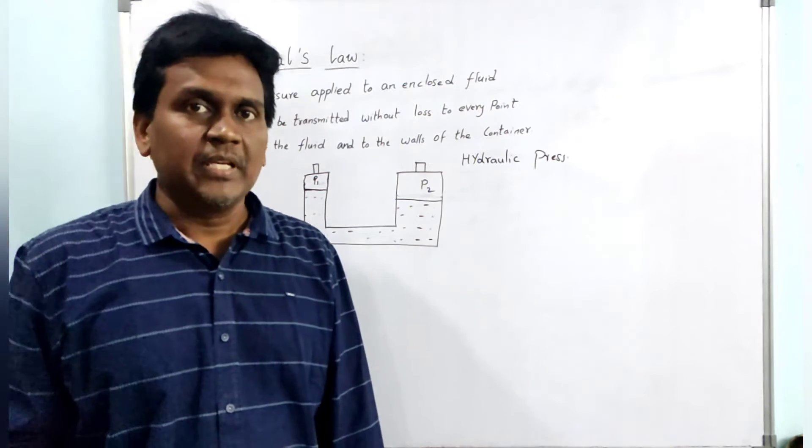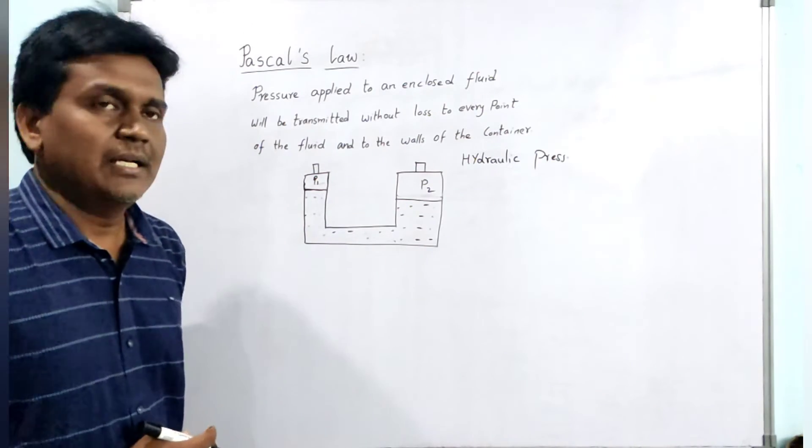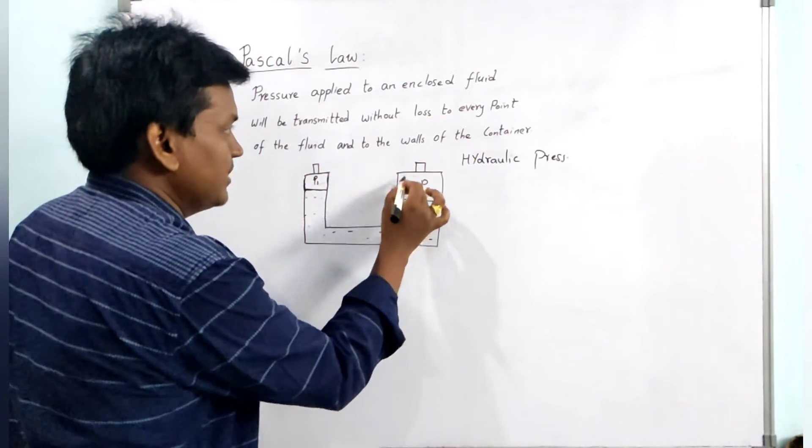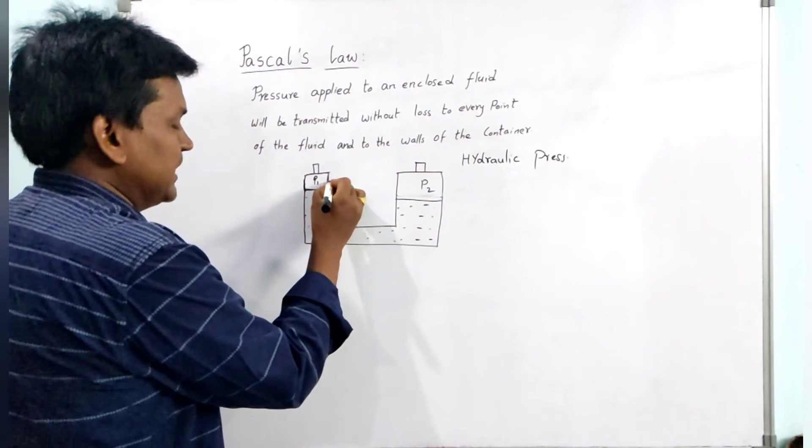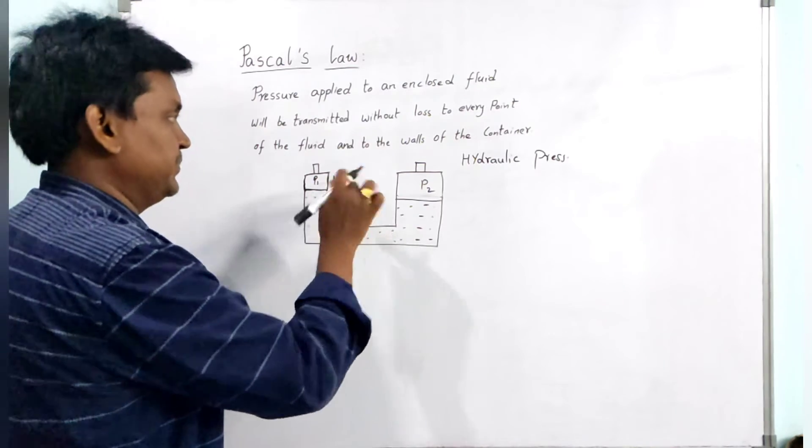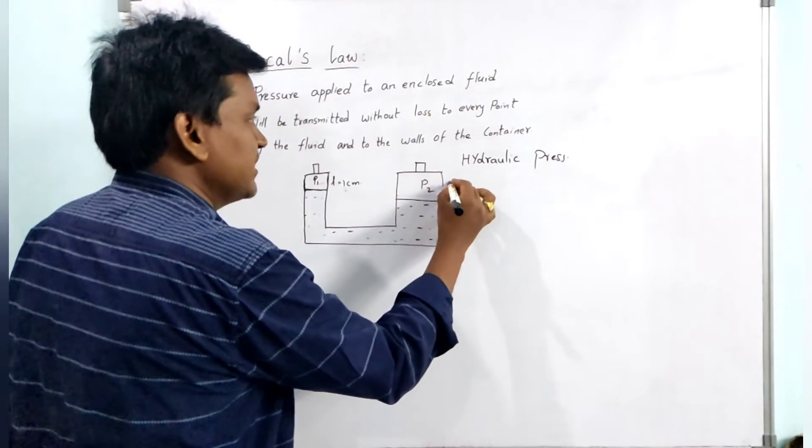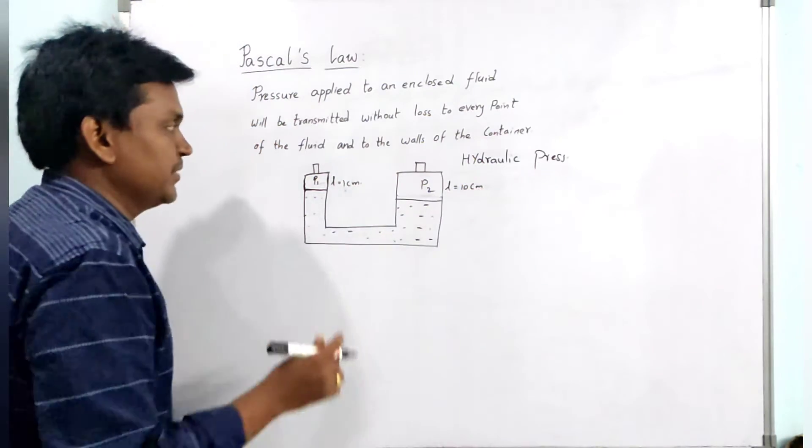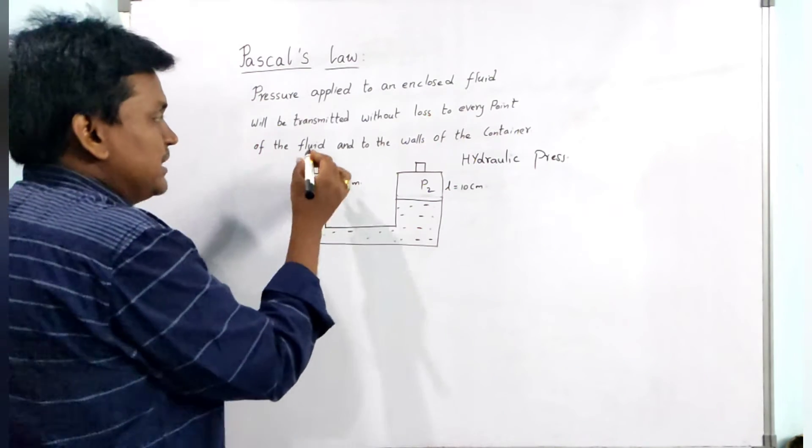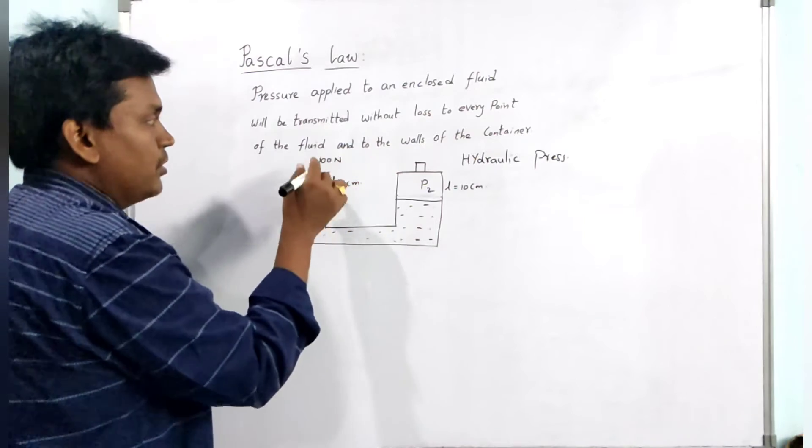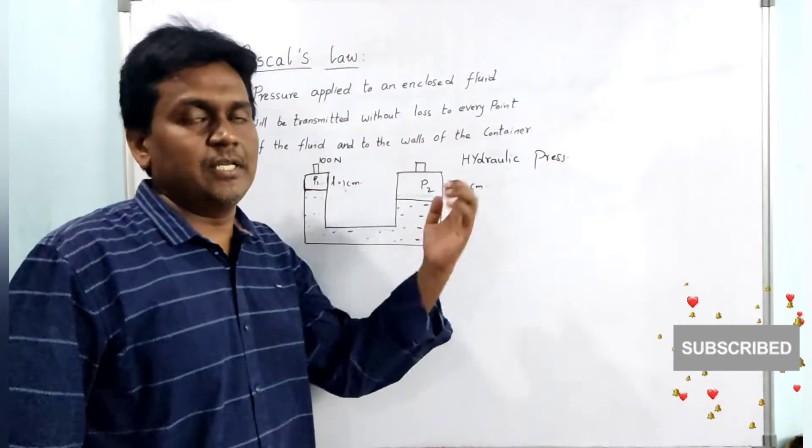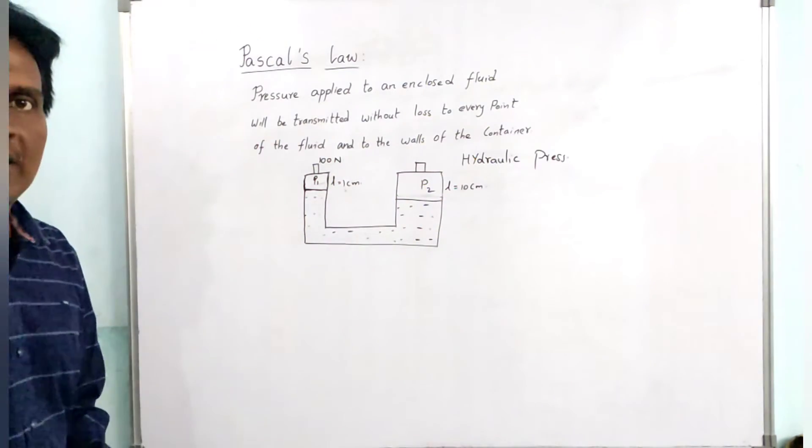I am considering this as a square and this as a square. It is having a length of 1 cm, and this is having a length of 10 cm. This is a small piston and this is a big piston. I am assuming that 100 Newton of force is applied on piston 1. So what is the output force acting on piston 2? Let us see that.